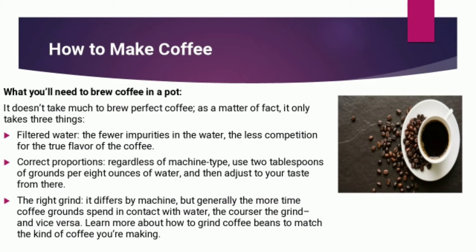I will show you an example of a recipe: how to make a cup of coffee. What you'll need to brew coffee in a pot — it only takes 3 things. First, filtered water: the fewer impurities in the water, the less competition for the true flavor of the coffee. Second, correct proportion: use 2 tablespoons of ground coffee per 6 ounces of water, then adjust to your taste. Third, the grind: it differs by machine, but generally the more time coffee grounds spend in contact with water, the coarser the grind, and vice versa.